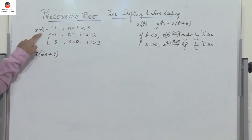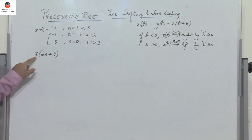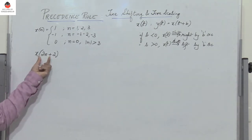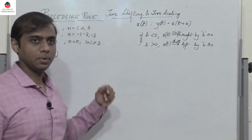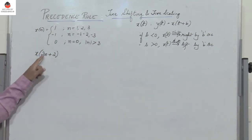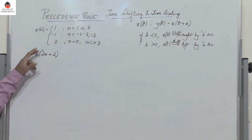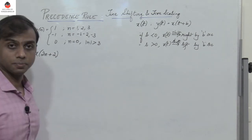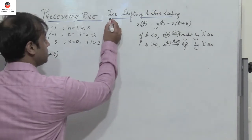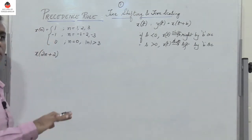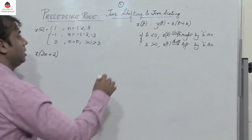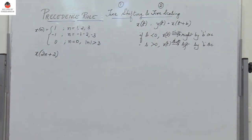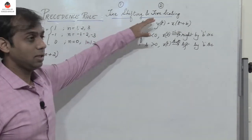For example, if I have a given signal x of n and I need to find x of 2n plus 2 — x of n plus 2 is time shifting, and 2n is time scaling — when I need to apply both, there is a precedence rule. We have to first apply time shifting, so first shift the signal, and then we time scale the shifted signal. First is time shifting and then is time scaling.